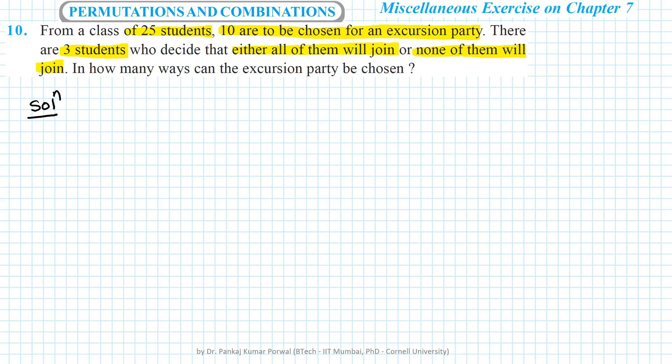So that number of ways will be 22C7. Or when all three of them decide that they will not join, then we have to select 10 out of the remaining 22.